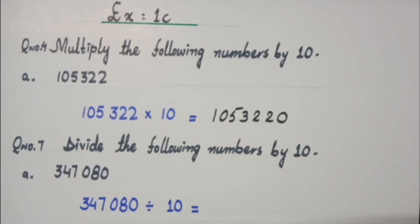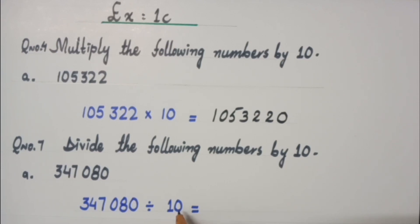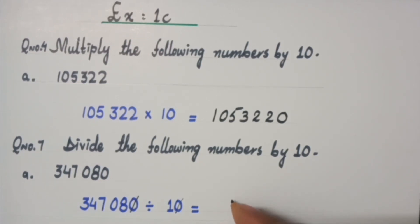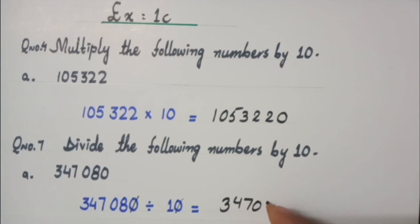We can only remove one zero from the right side and one zero from the left side, because we have only one zero on the right side. I am going to remove them by cutting. This zero is going to be cancelled with this zero. Then, write the number to the left. The number which is left is 34,708. So what we got after division is 34,708.